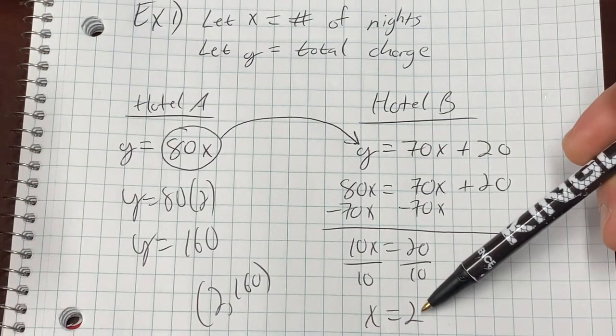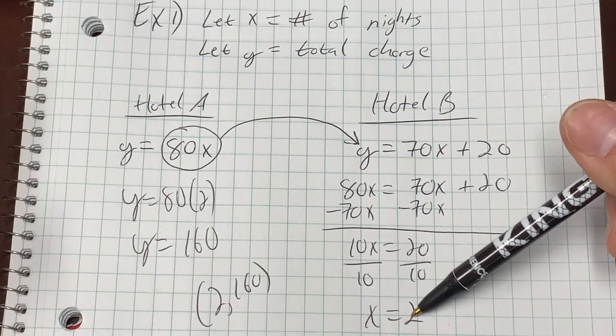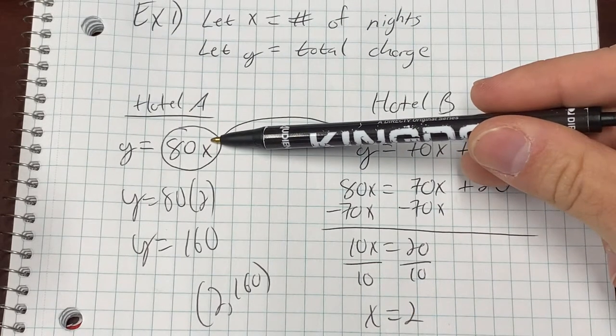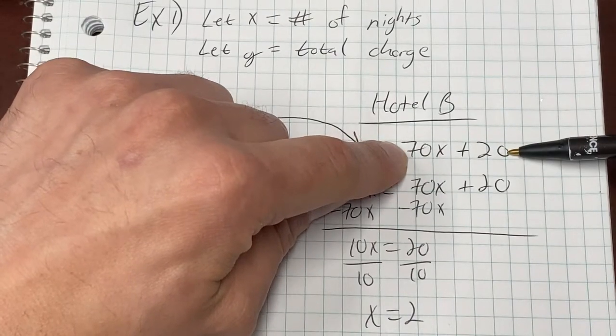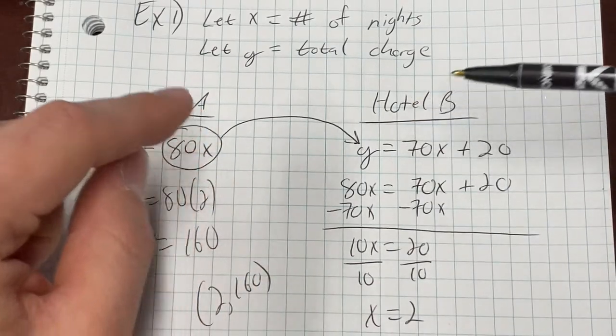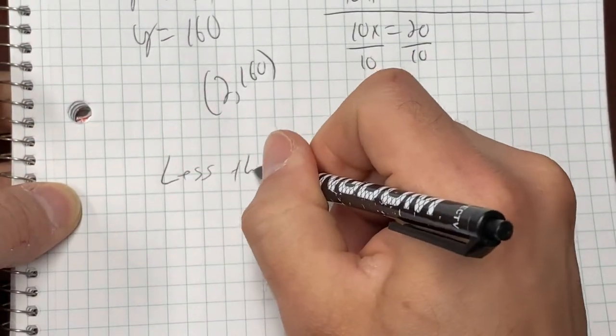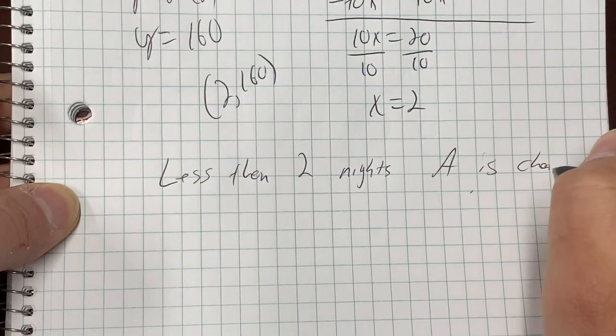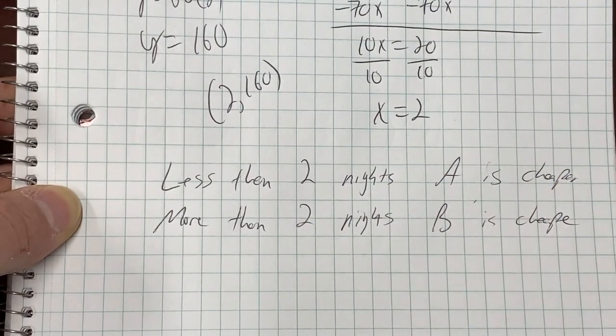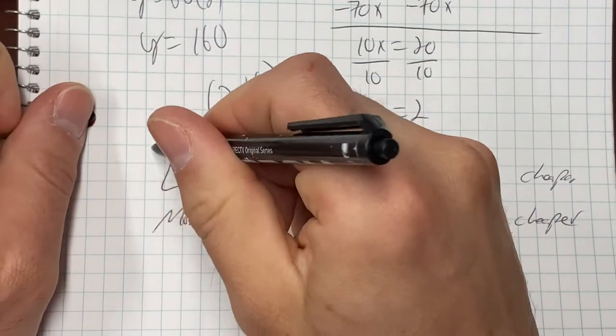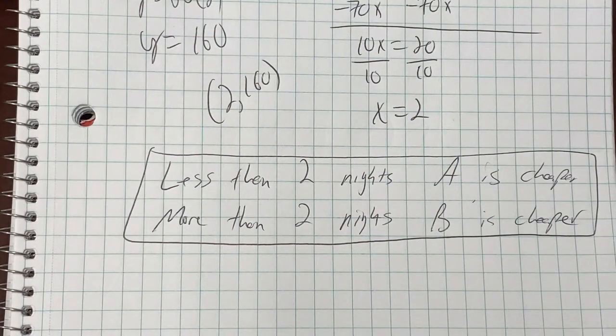So 2 nights, $160 is not your answer to this problem but 2 nights, $160 is the break-even point. Two nights it doesn't matter which hotel you stay at. A or B. Doesn't matter. Two nights you're paying $160 at both of them. When would you want to choose one or the other? Well it's all a matter of are you going to stay less than two nights or more than two nights? Less than two nights? Which one's going to be cheaper? This one is going to be cheaper. Less than two nights means one night. One night you're going to pay 80 bucks at A. One night here you're going to pay 90 bucks, 70 plus 20. So one night this guy is cheaper. Two nights is the same. More than two nights, now you're going to want to stay at hotel B. And that's the answer to this problem. Less than two nights, A is cheaper. More than two nights, B is cheaper.